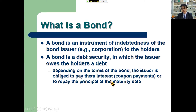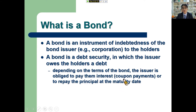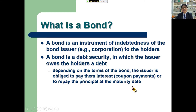Depending on the terms of the bond, the issuer — the company, municipality, or national government — is required to pay the holders interest. As we dig deeper into the topic, interest payments are actually called coupon payments, or to repay the principal at maturity. Because some bonds actually don't pay interest — you earn from the difference of the bond's present value and the par value of the bond. More on that later.